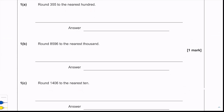Question 1a says: round 355 to the nearest hundred. Because we've got 355 and we're at 50 or above, we need to round up, so we round up to 400.